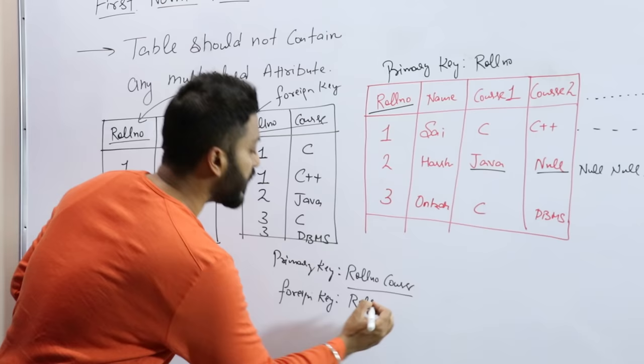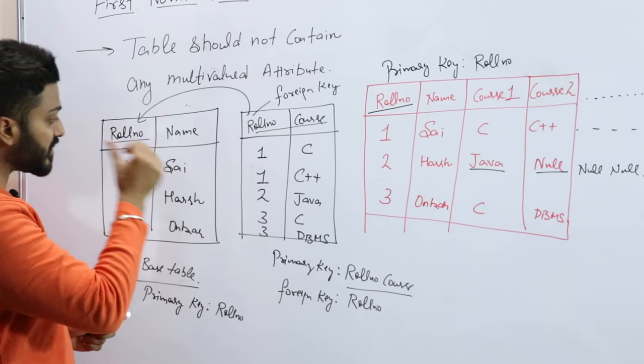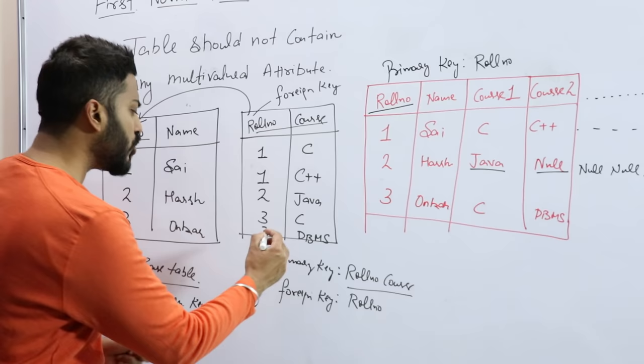So this representation can be seen: if a student has n number of courses enrolled, then you can easily enter the values there, but in the base table that student has only one entry.